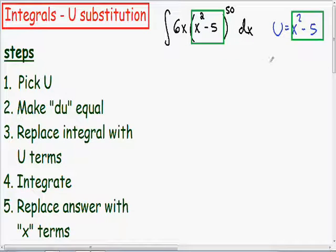So I'm going to take the derivative of u, which is just a derivative of x squared minus 5, which is just 2x. And since we just derived with respect to x, we have to put a dx at the end.